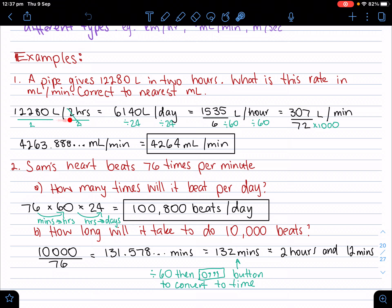So first, we write our rate in the syntax that's required: 12,280 liters in two hours. Now in order to convert this into milliliters per minute, I first need to convert this into liters per hour. If that's two hours per hour, I'm going to divide both sides by two.